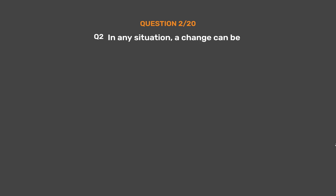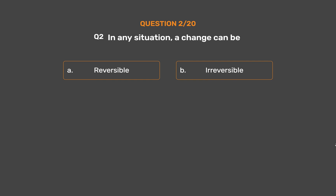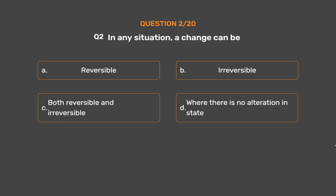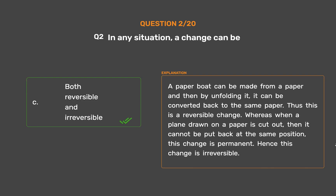Question number 2: In any situation, a change can be — Option A: Reversible. Option B: Irreversible. Option C: Both reversible and irreversible. Option D: Where there is no alteration in state. The correct answer is Option C, Both reversible and irreversible. A paper board can be made from a paper and then by unfolding it, it can be converted back to the same paper — thus this is a reversible change. Whereas when a plane drawn on a paper is cut out, it cannot be put back at the same position. This change is permanent, hence irreversible.